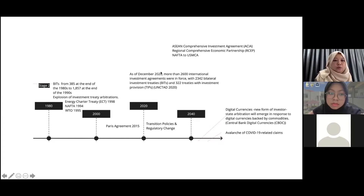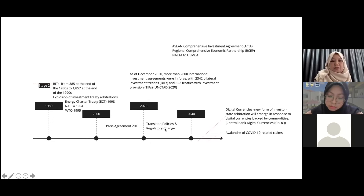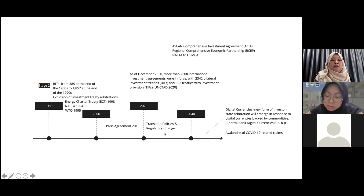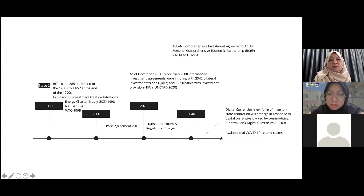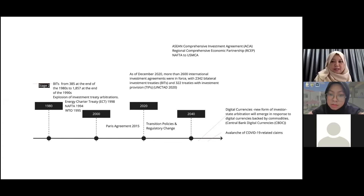By 2020, more than 2,600 international investment agreements were in force. Now we are in 2022, COVID strikes, and we will also see what will happen until 2040. We are now in the transition policies — these treaties, which states enter into, normally have a time span of 10 or 20 years. States which entered into treaties in 1980 for 20 years will see those treaties ending in 2000. The trend right now is states are trying to renegotiate the contents of the treaty to incorporate current concerns.